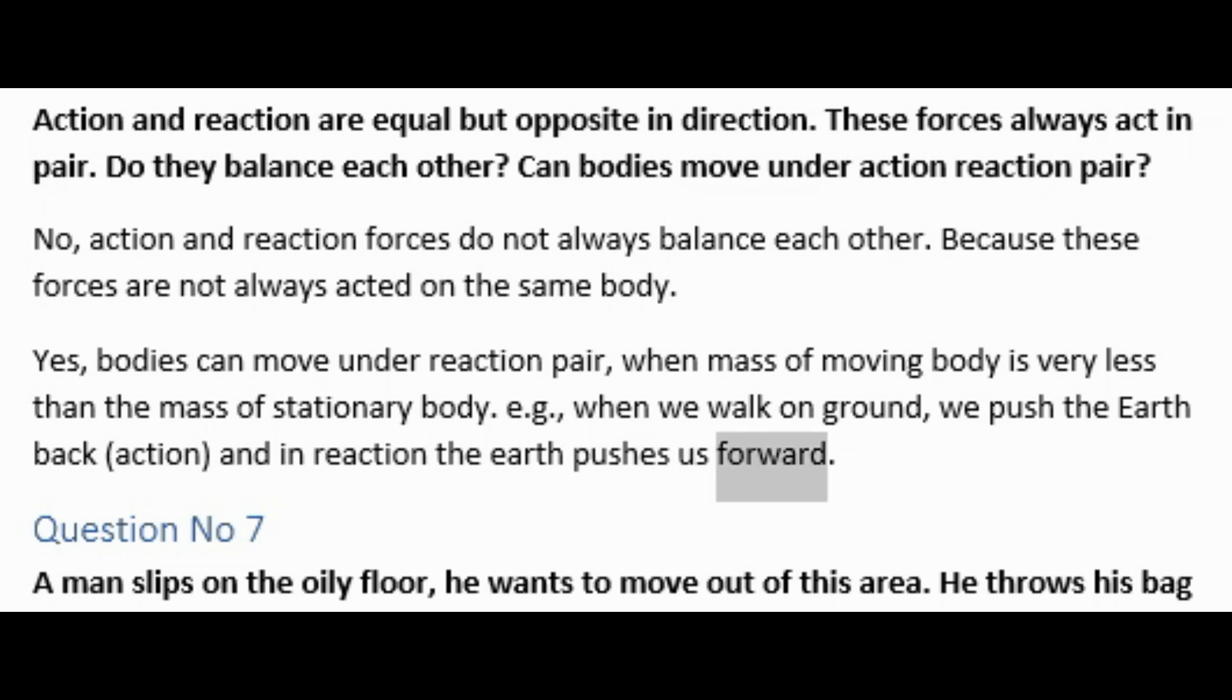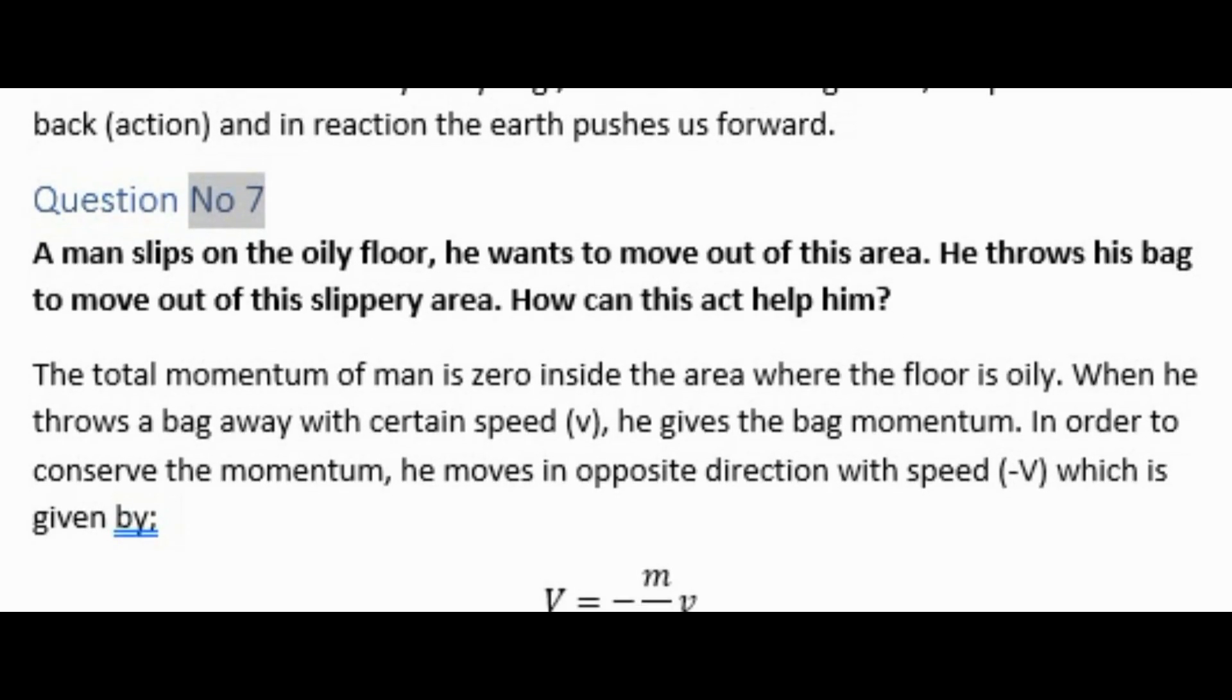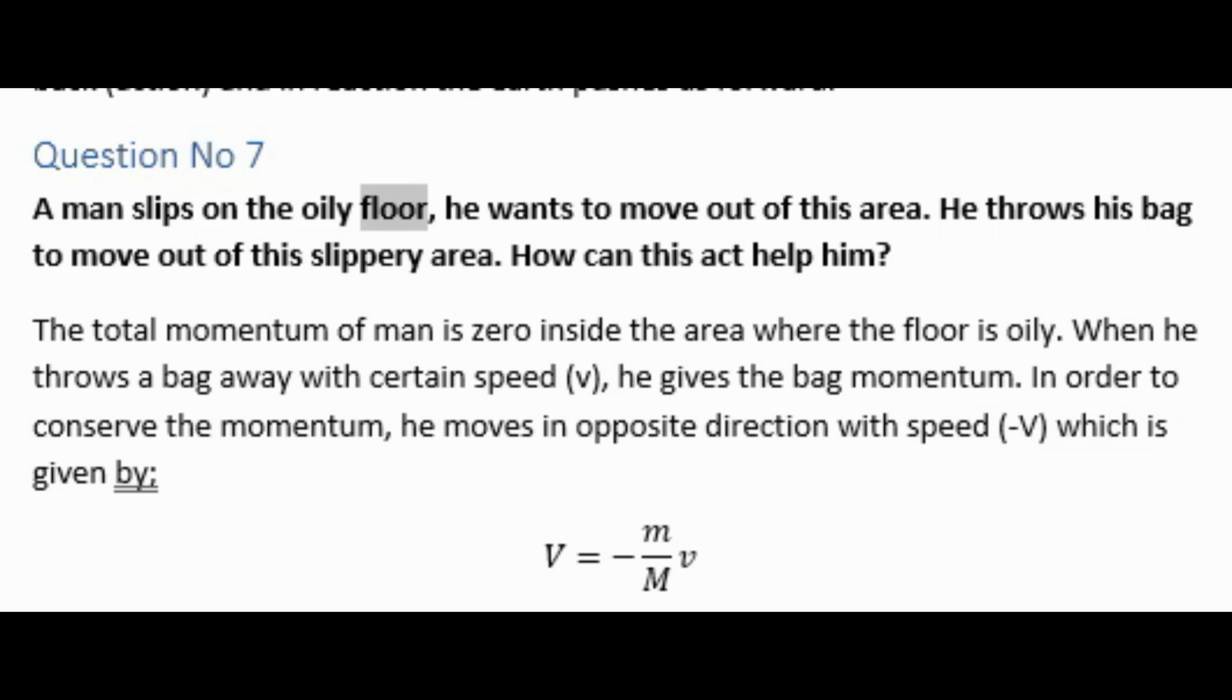Question number seven: A man slips on the oily floor. He wants to move out of this area. He throws his bag to move out of this slippery area. How can this act help him? The total momentum of man is zero inside the area where the floor is oily. When he throws a bag away with certain speed v, he gives the bag momentum. In order to conserve the momentum, he moves in opposite direction with speed -v, which is given by V = -(m/M)v.